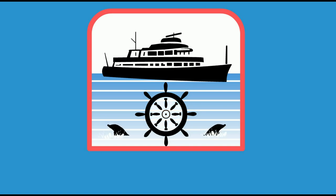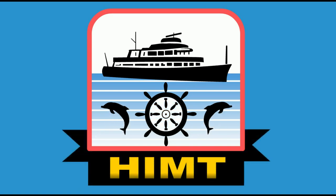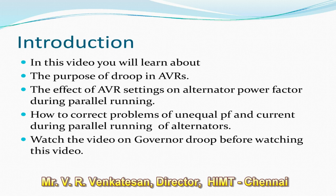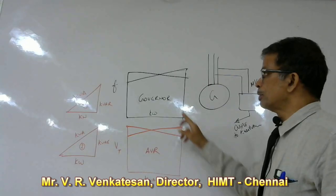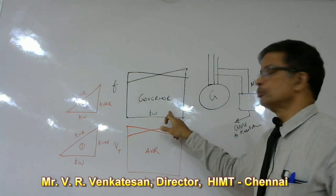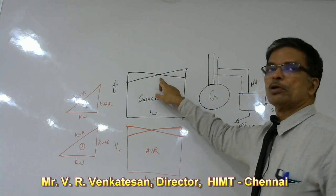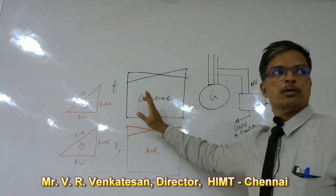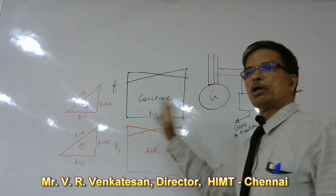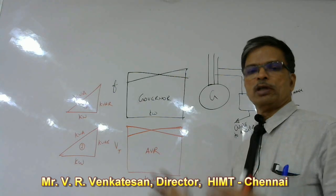This is HIMT — Hindustan Institute of Maritime Training. This is the droop for the governor. It shows that because of the droop you can share kilowatt in a stable manner. If you do not have droop, kilowatt will keep on shifting between the two generators.